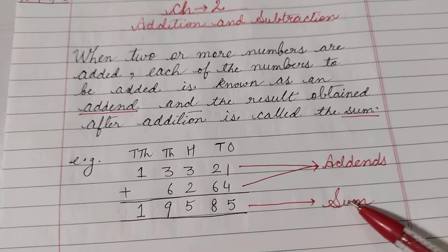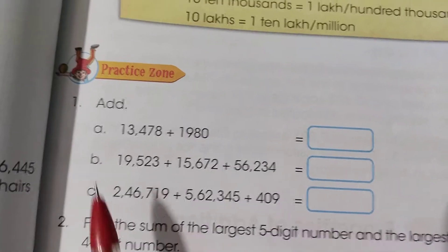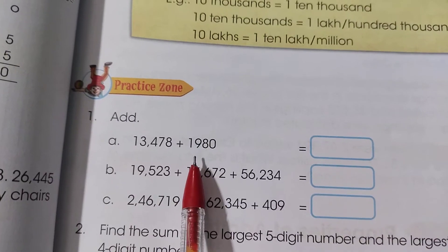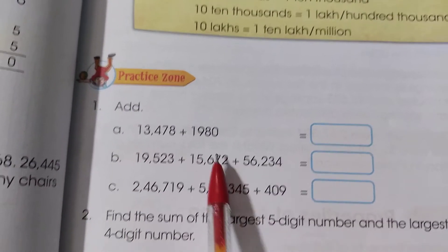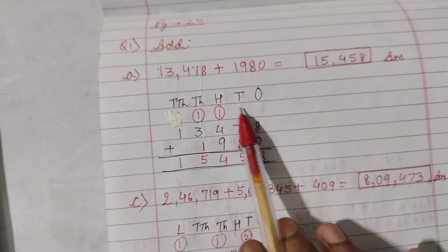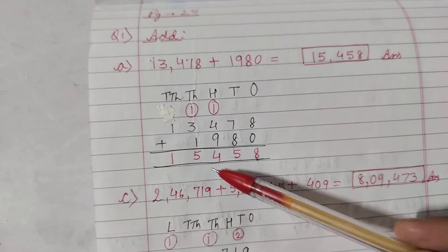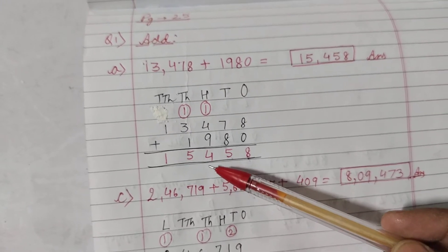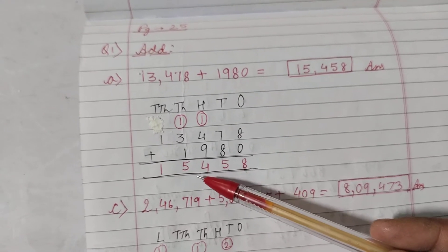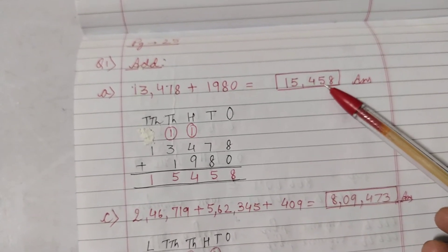Now children, open your page number 25. We will do question number 1. Question number 1, we have to add 13,478 and 1,980. So, children, add in your copy. Arrange the numbers according to Indian place value chart. Now, arrange it and find the sum. So, children, when we add, we are getting 15,458. So, write here the answer, 15,458.